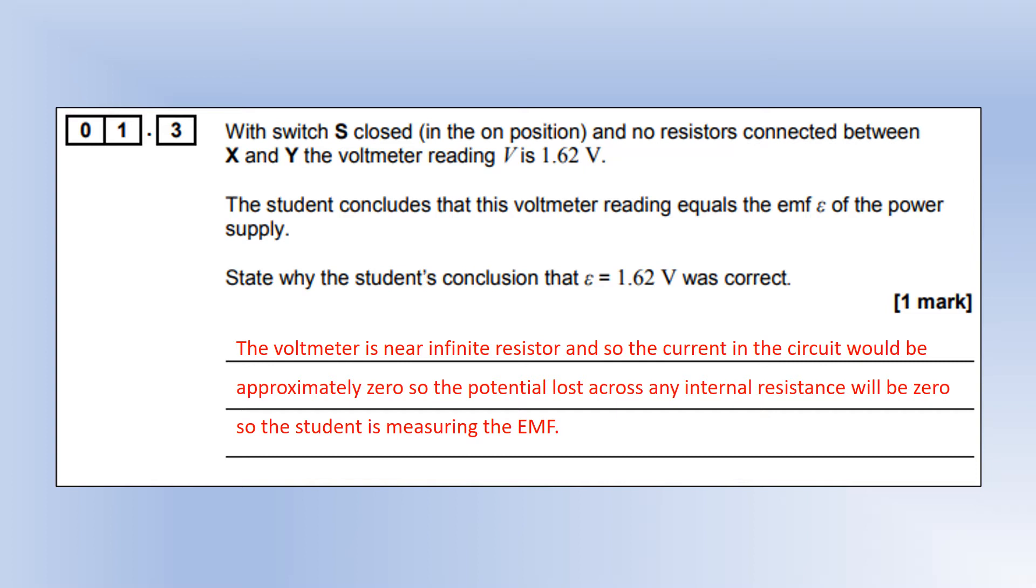So even though there's a complete circuit, the current will be pretty much zero, and that means the potential lost across the internal resistance will be zero, meaning the terminal voltage will be equal to the EMF.